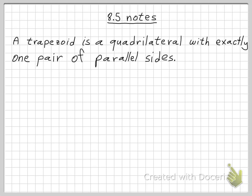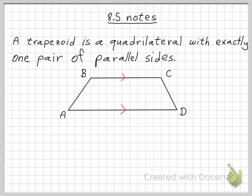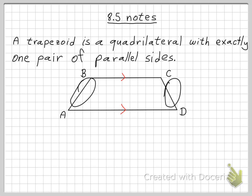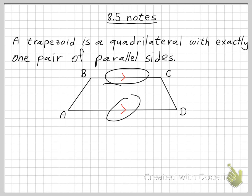Here's a quick review. A trapezoid is a quadrilateral with exactly one pair of parallel sides. That means it's a four-sided figure, and BC is parallel to AD, but AB cannot be parallel with CD. If AB were parallel with CD, you'd have another figure, like a square or a rectangle. So a trapezoid is a four-sided figure where only one pair of sides are parallel and the other two are forced not to be parallel.